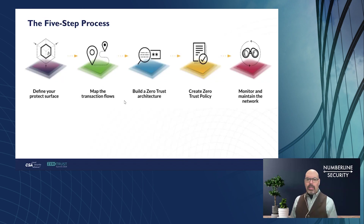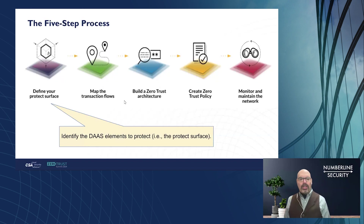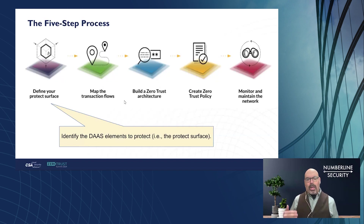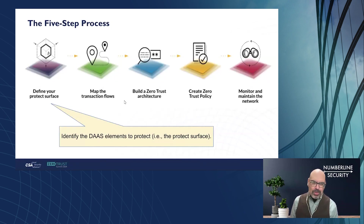Step one is to actually identify your data, application, asset, and service — your DAS elements — that you're going to protect. There are lots and lots of these in any enterprise, so it's a question of how do you prioritize? You might prioritize based on risk, level of maturity, or maybe you have a new project you're about to roll out. There are lots of ways to prioritize, and none of them are wrong. Just don't do them all at once, and don't start with the highest-risk, highest-value, most critical assets in your enterprise — that should not be the first one you do.